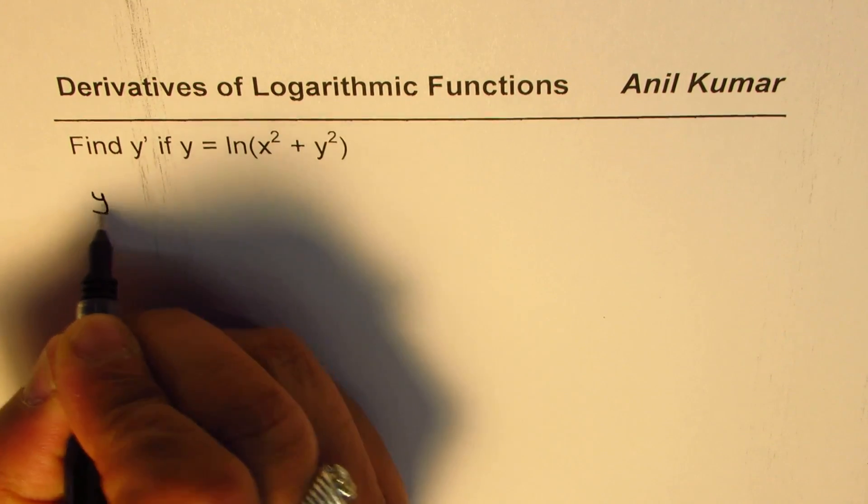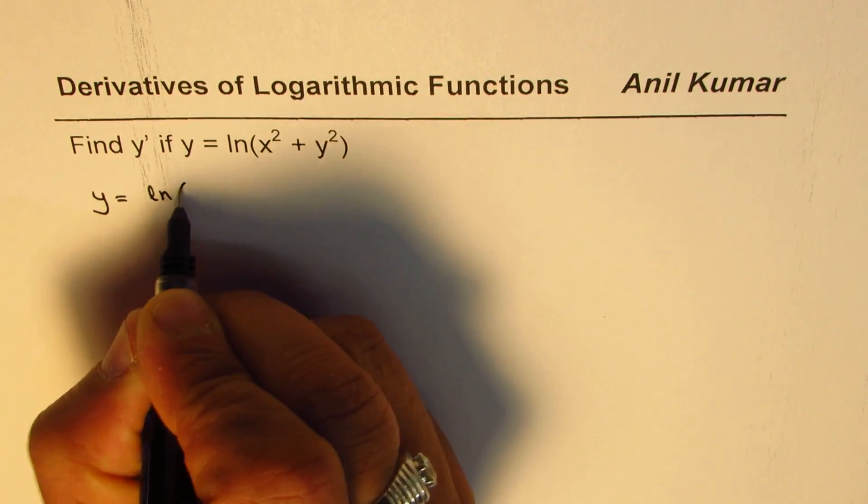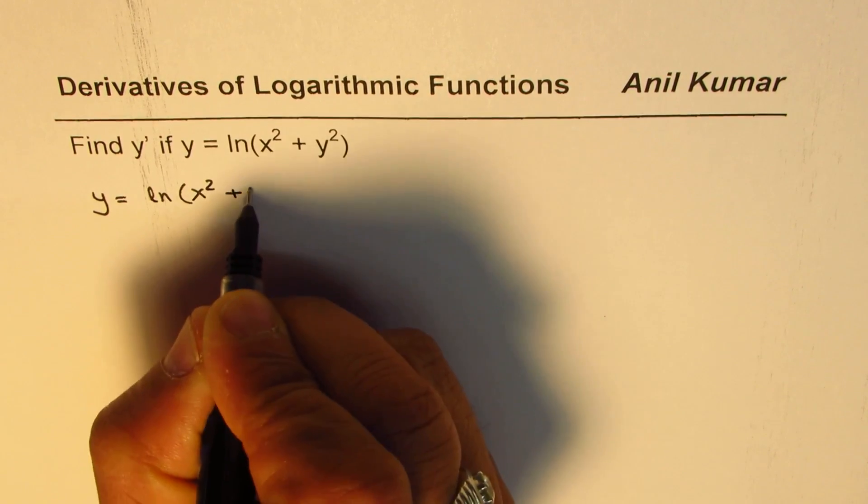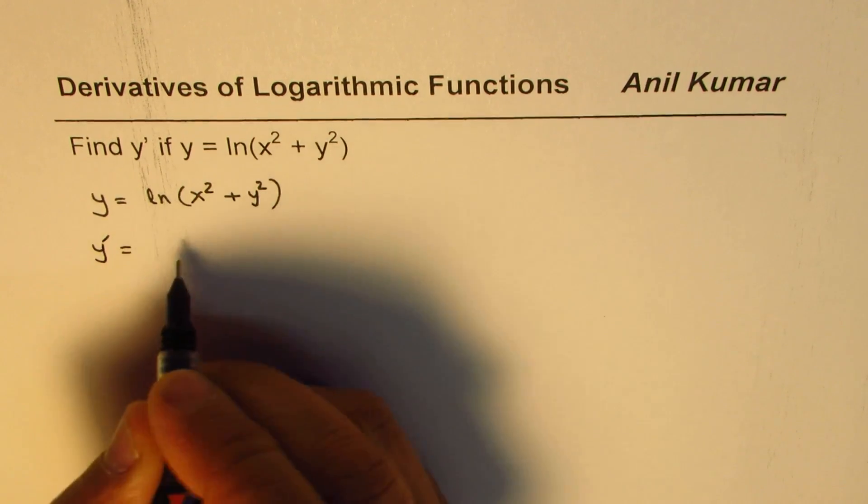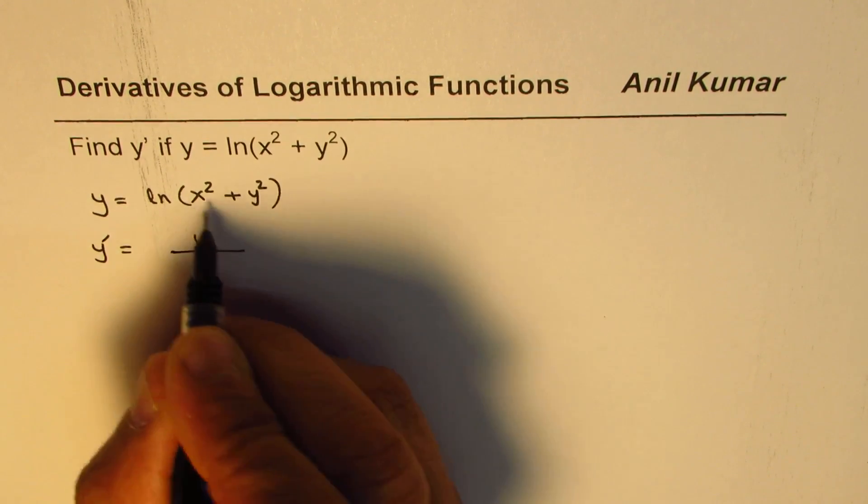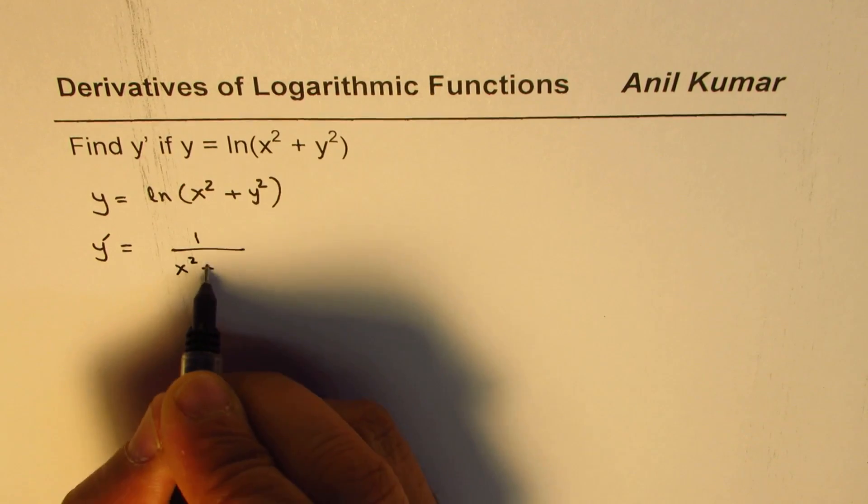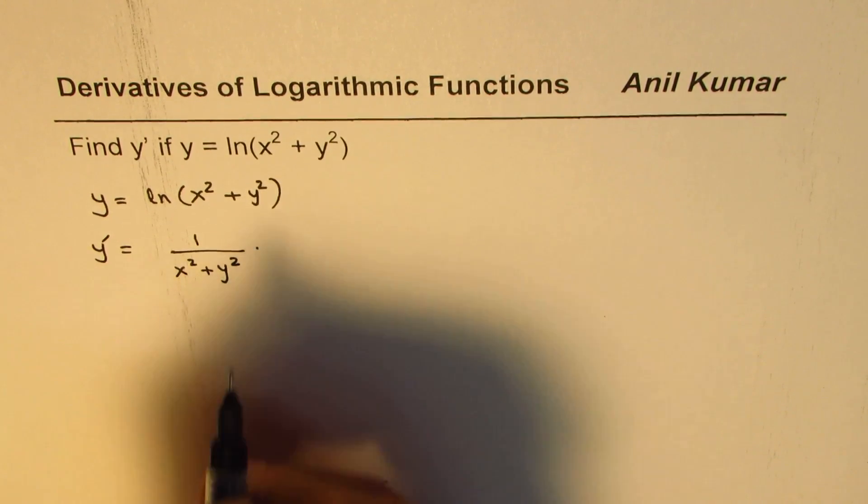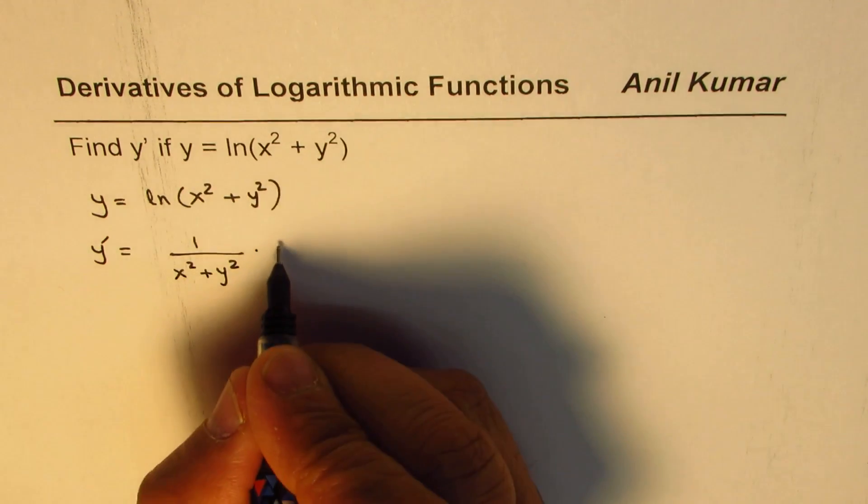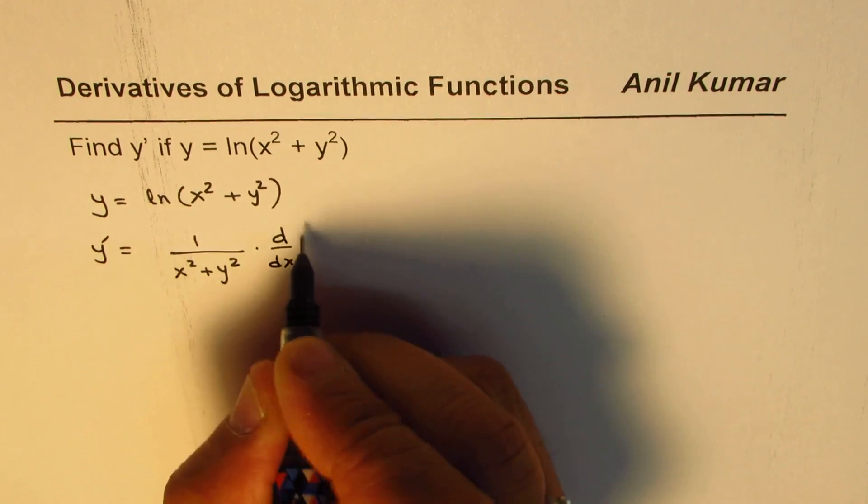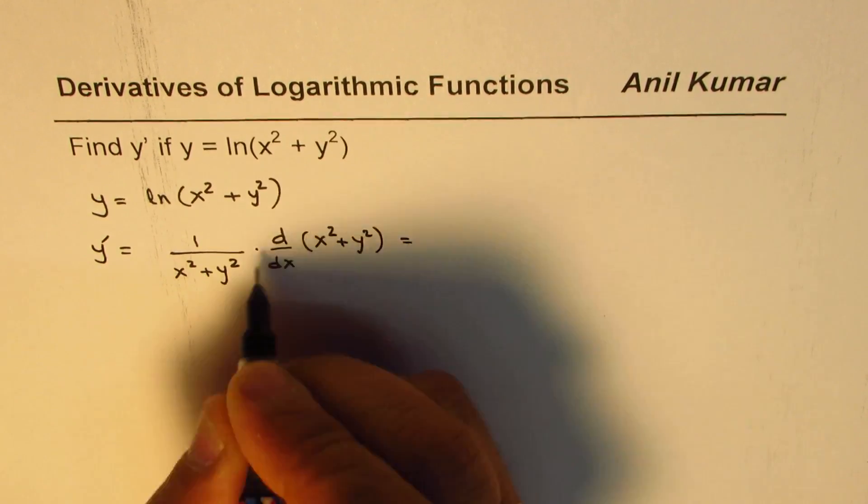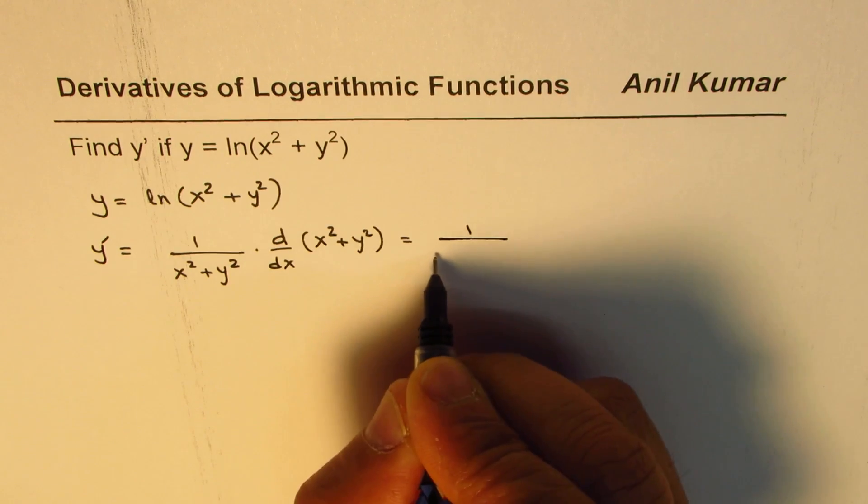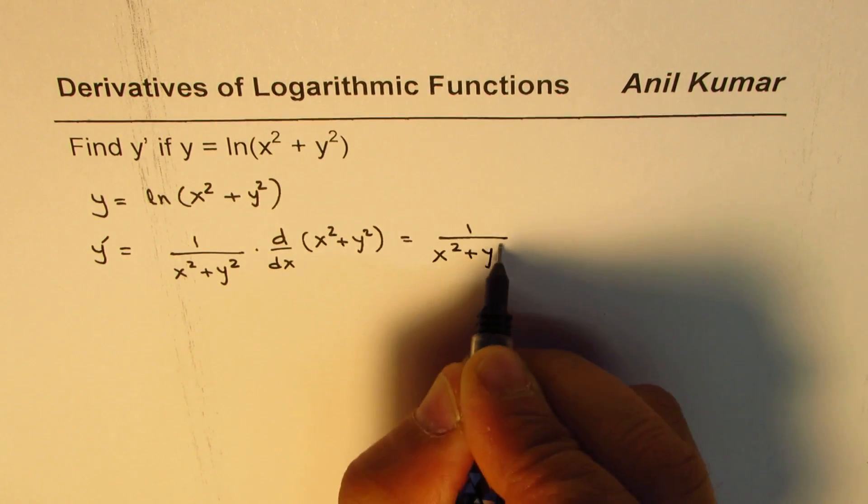Now y equals ln x squared plus y squared. So y dash or derivative of this function will be 1 over x squared plus y squared times derivative of inside function, times derivative of x squared plus y squared, which is 1 over x squared plus y squared.